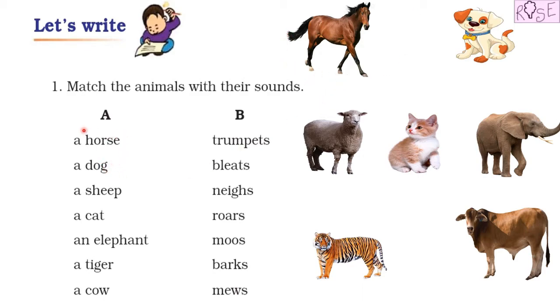So let us first read the name of the animals and see their pictures. The first one is a horse. Where is horse located? Here is the horse. Next is a dog. Here is the picture of a dog. Next is a sheep. Where is the sheep? Here it is.